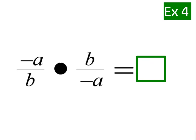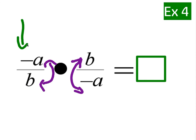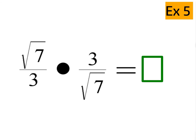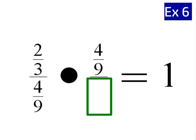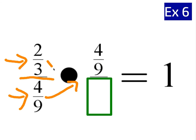How about negative a over b times b over negative a? Notice these two are flipped from each other. Since we multiply by the flipped version, we get 1 back — and it works for negatives as well. You could even have a negative on top and bottom. In general, it works for any real number. It also works for square roots: square root of 7 divided by 3, times the flipped version, 3 over square root of 7 — crossing the square root of 7s and the 3s — just gives you 1 back. It also works for complex fractions. If I have 2 thirds on top and 4 ninths on the bottom, and I multiply by the flipped version — 4 ninths on top and 2 thirds on bottom — the 2 thirds would cancel, and you would end up with 1.